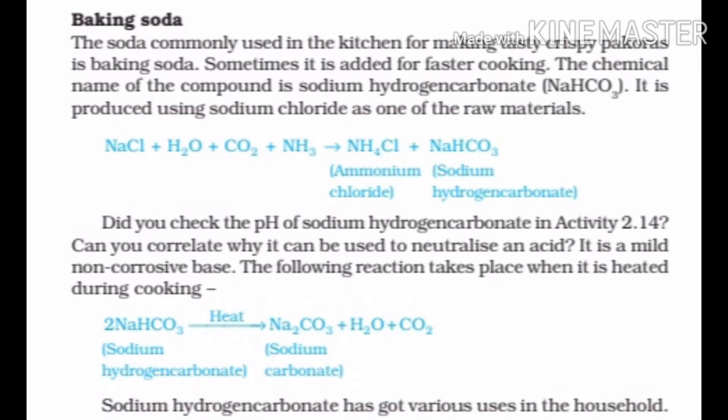Baking soda, which we commonly use in the kitchen for making crispy pakoras and cakes, is obtained by adding carbon dioxide gas and ammonia in sodium chloride solution, which forms ammonium chloride and sodium hydrogen carbonate. The pH of baking soda is basic in nature, so you can now understand why it is used to neutralize acid produced during acidity.